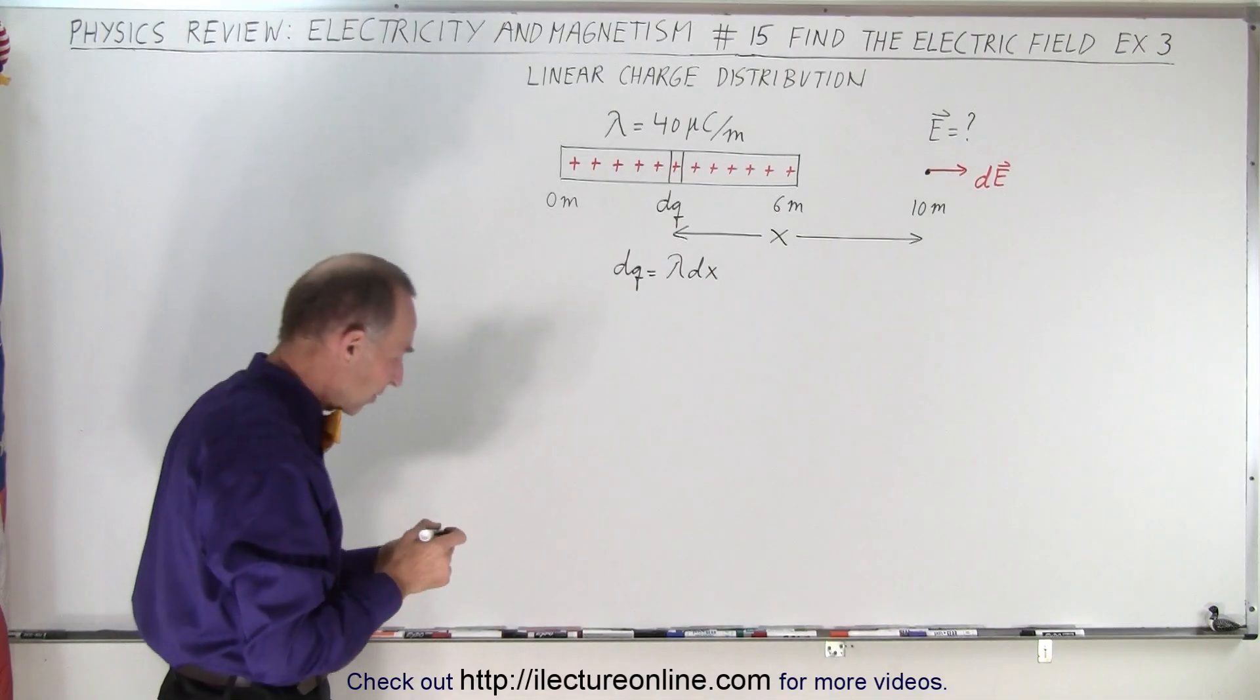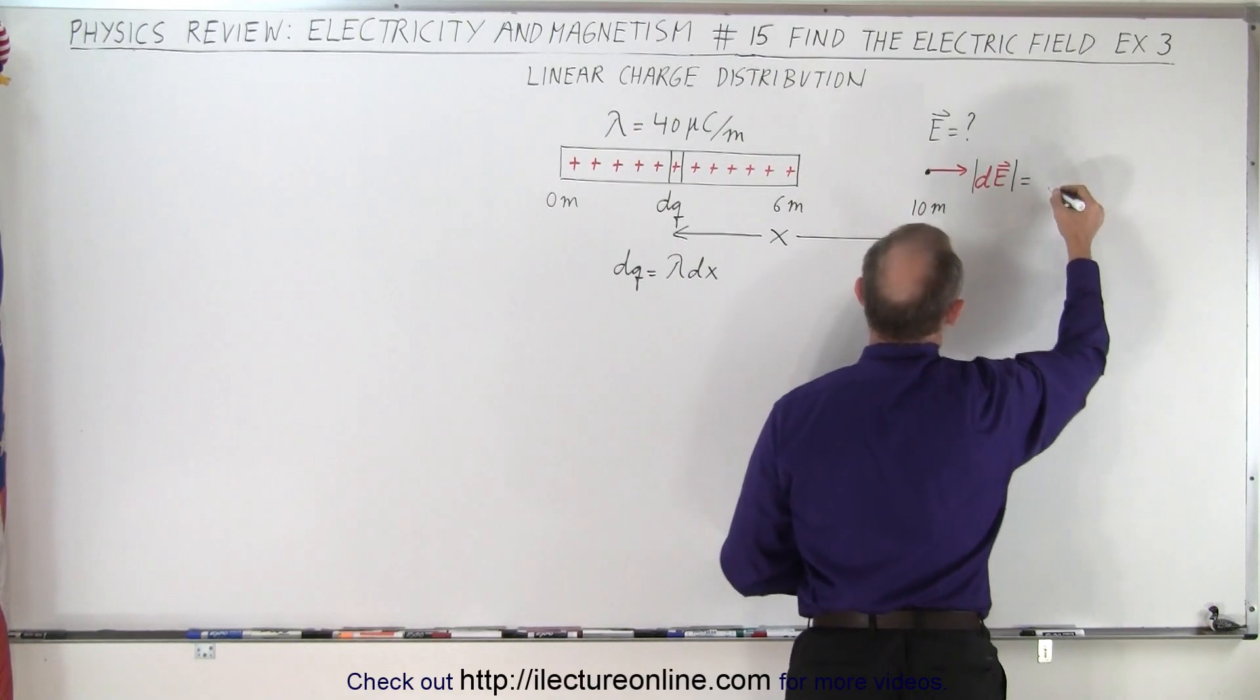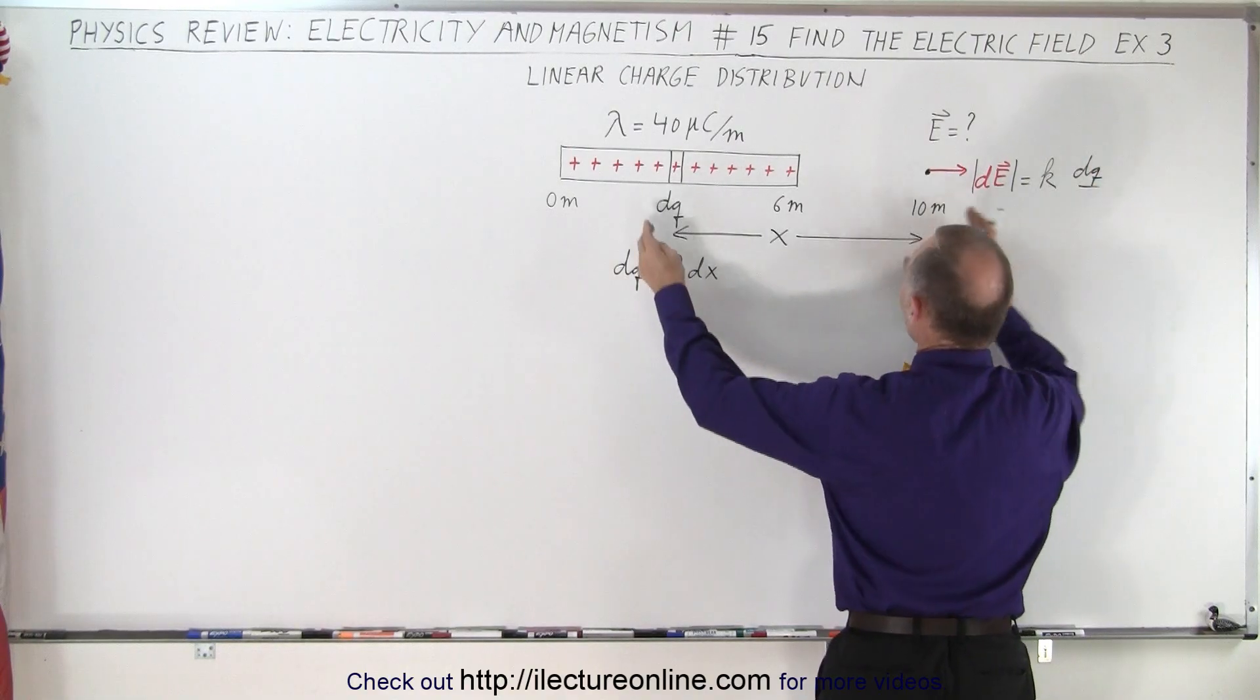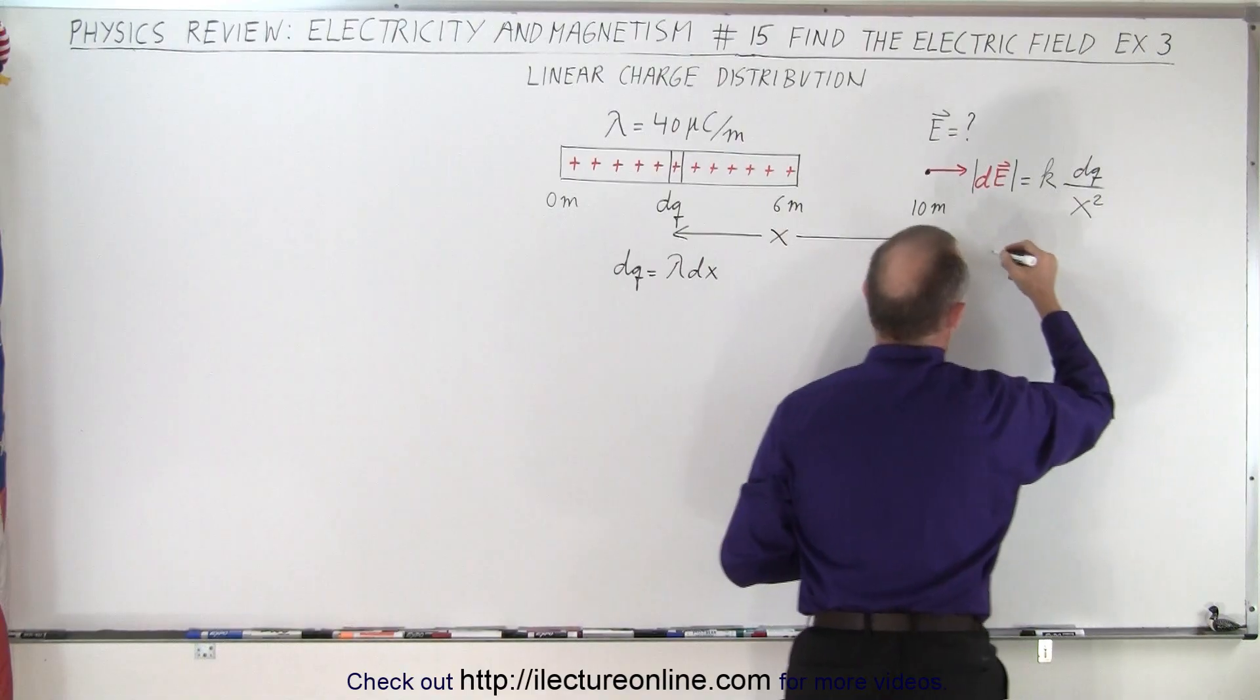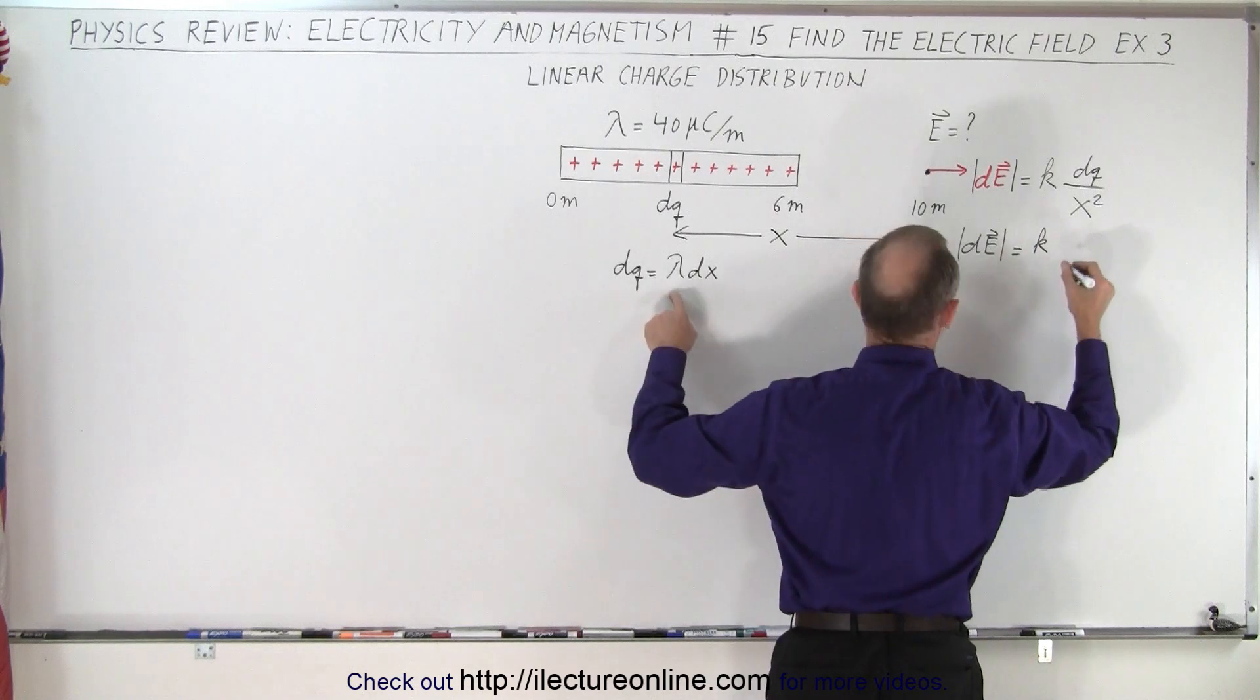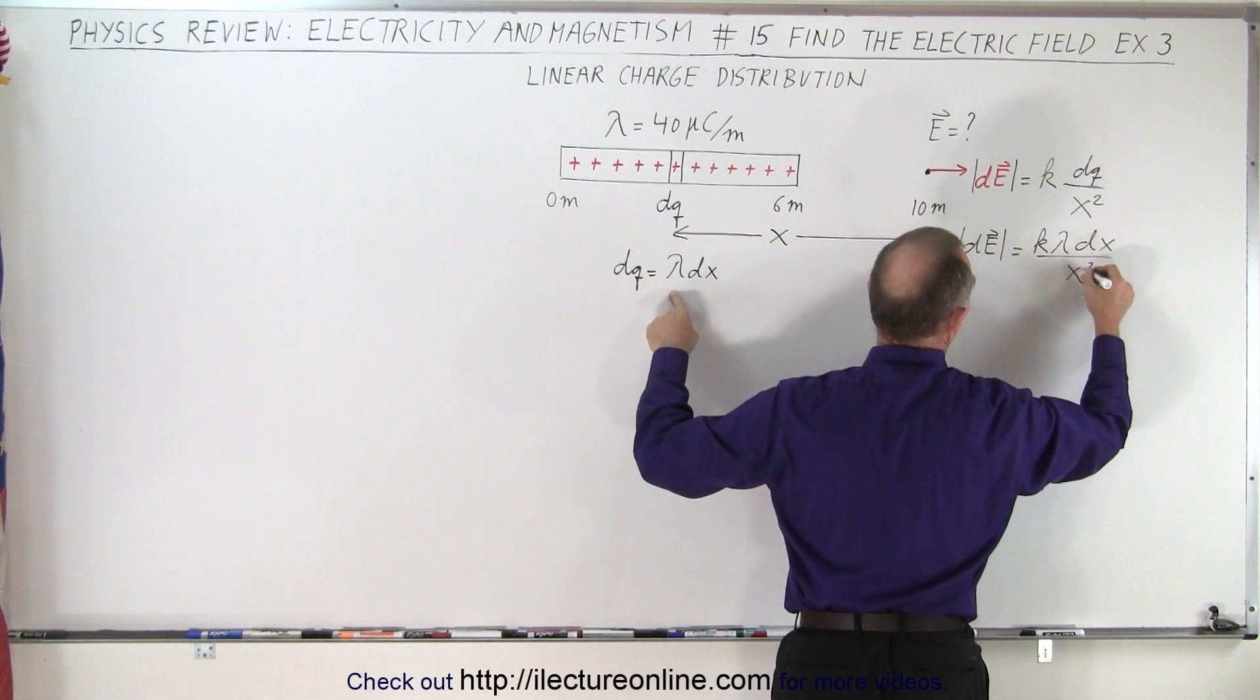And so that means that the electric field at that location, the magnitude of that, is going to be equal to k times the charge that causes it, which is dq, divided by the distance away from that, which is x squared. And of course that means that dE, the magnitude of that, is going to be equal to k times the charge density times dx over x squared.